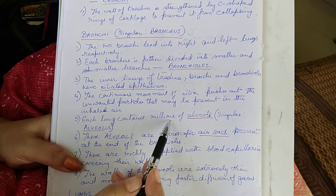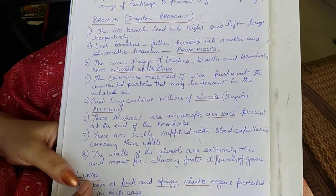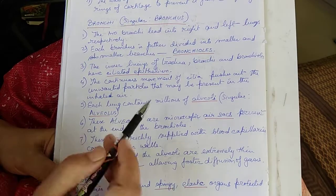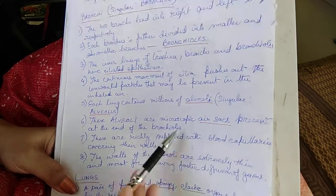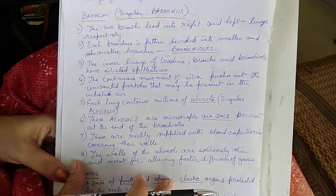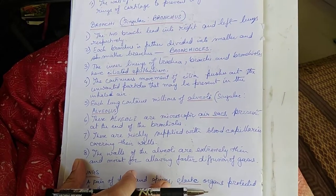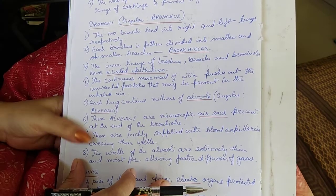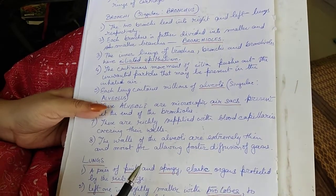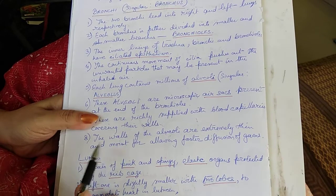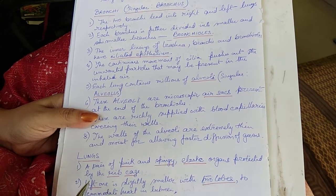Each lung contains millions of alveoli — singular: alveolus. These alveoli are microscopic air sacs present at the end of the bronchioles. They are richly supplied with blood capillaries covering their walls. The walls of the alveoli are extremely thin and moist, allowing faster diffusion of gases.